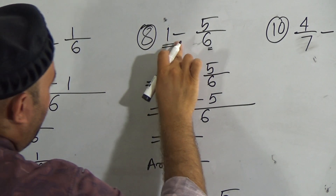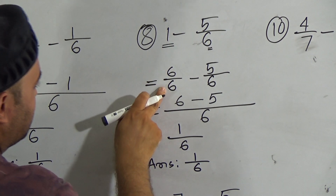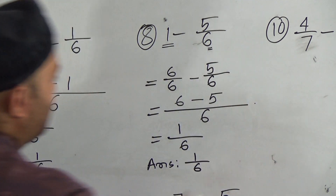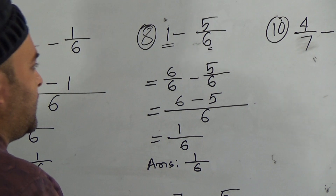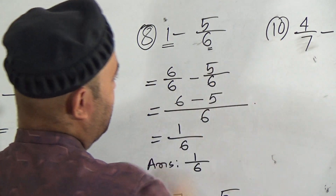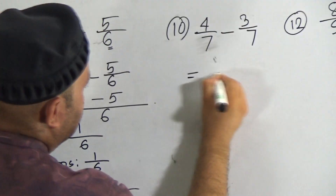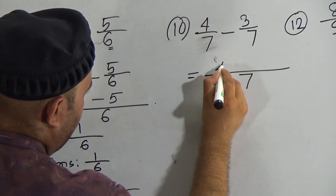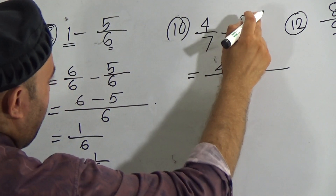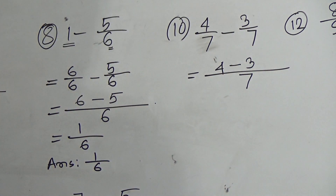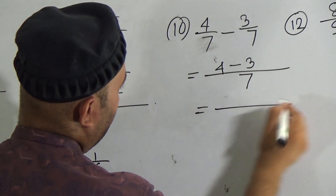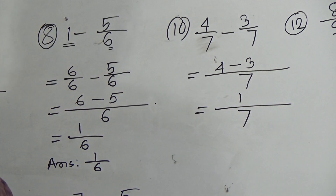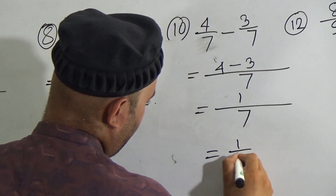Instead of 1, we can write 6 out of 6 because 6 divided by 6 is 1 — that's the same process you have already learned. Now, question number 10: 7 is the same denominator, so write 7 as denominator in the second line. Put the first numerator 4, the minus sign, and the second numerator 3. Subtract 3 from 4 — it will be 1, and 7 will be the denominator. So the answer will be 1 out of 7.